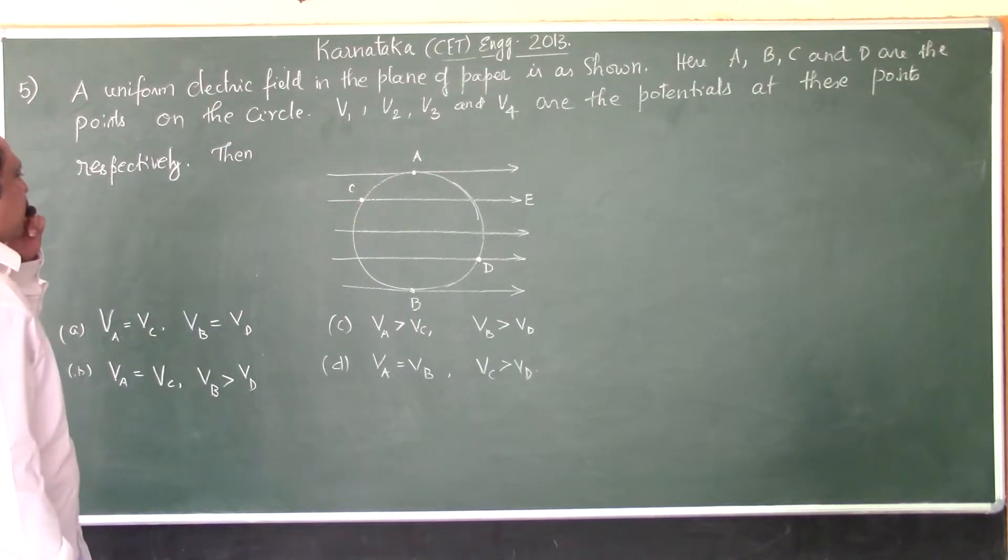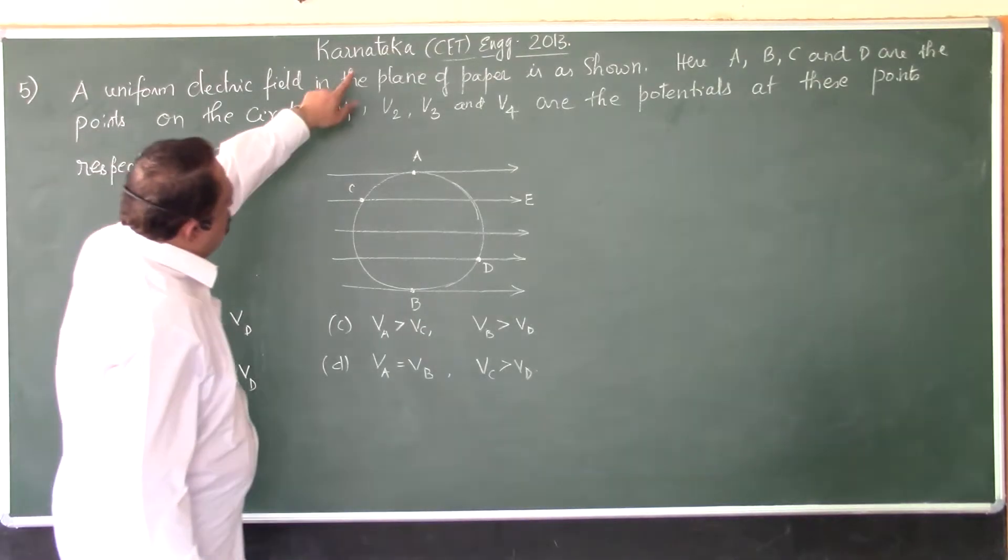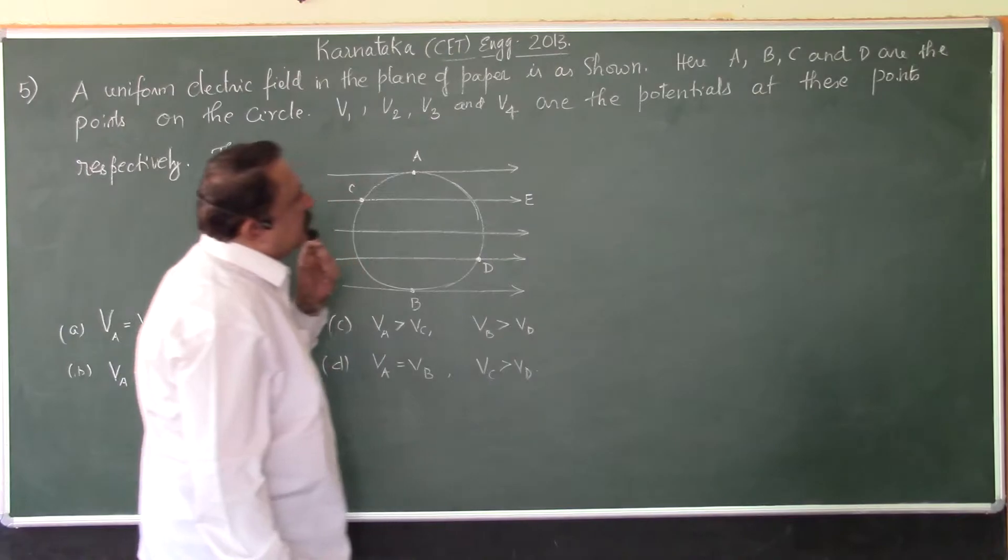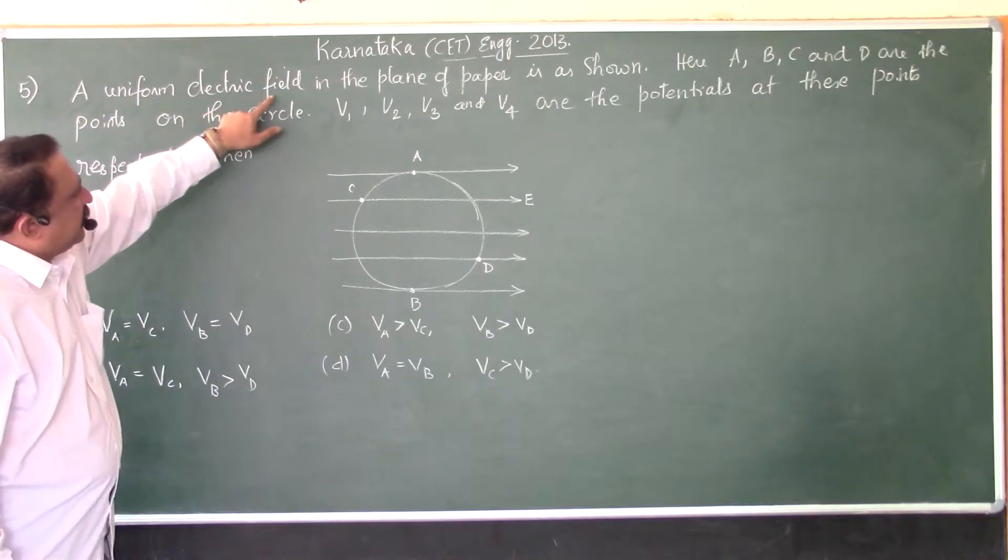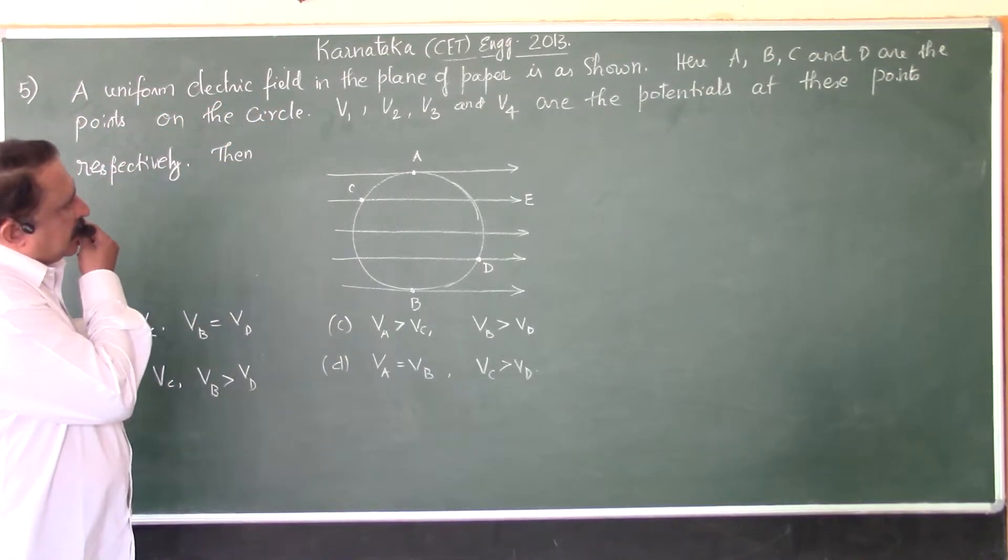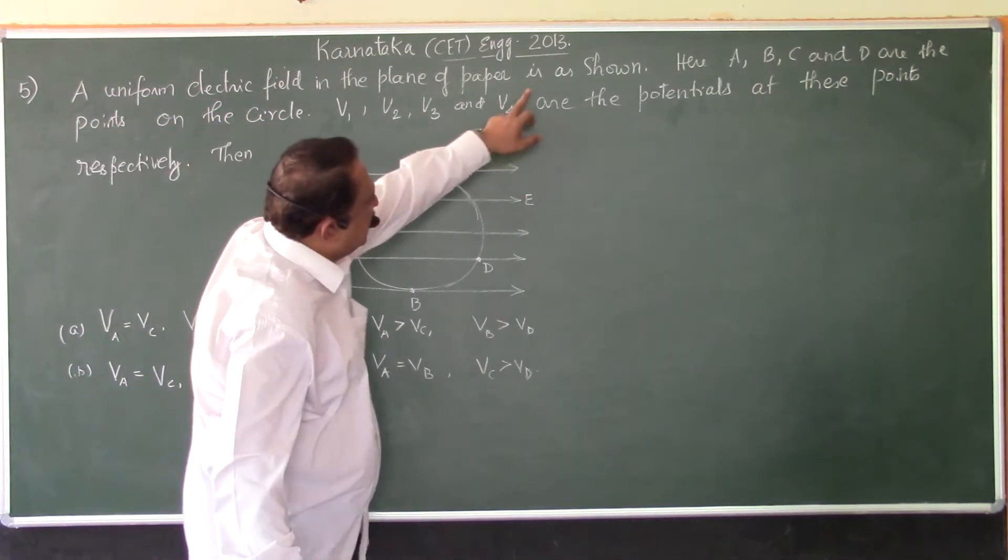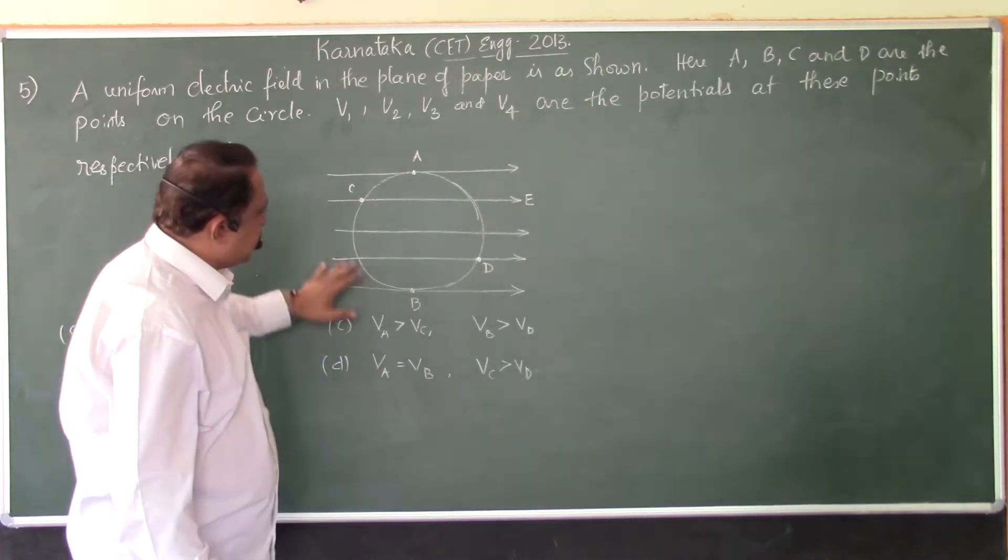We shall now take up the next problem of Karnataka CET Engineering of the year 2013. A uniform electric field in the plane of paper is as shown in this diagram.